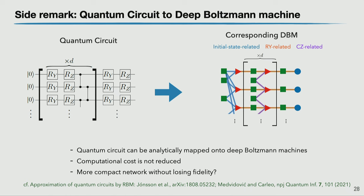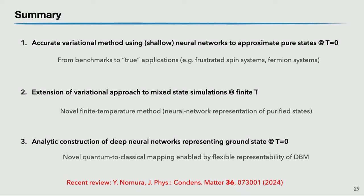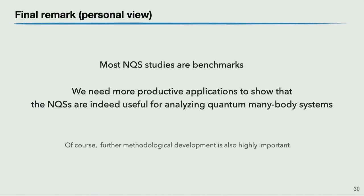As a side remark, using this method, we can exactly map a quantum circuit to a deep Boltzmann machine — just as quantum circuits can be represented by tensor networks, they can also be represented by the deep Boltzmann machine. To summarize: the quantum-to-classical mapping requires no numerical optimization but suffers from the sign problem for frustrated systems. The variational method can study both zero- and finite-temperature properties of frustrated spin systems. This topic is covered in our review paper, so please have a look. Thank you for your kind attention.